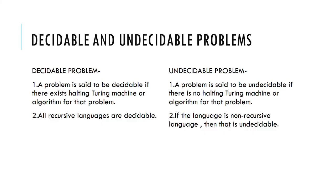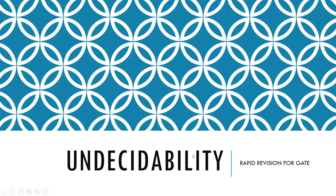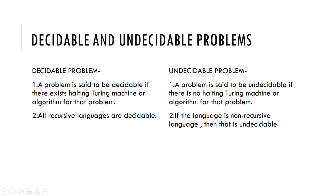So let's get started. What are decidable and undecidable problems? A problem is said to be decidable if there exists a halting Turing machine or an algorithm for that problem. An undecidable problem is one in which no halting Turing machine or algorithm exists. So if we are able to make a halting Turing machine, the problem is decidable; otherwise it is undecidable.